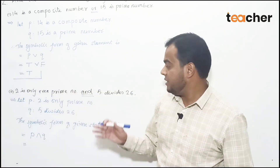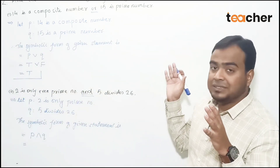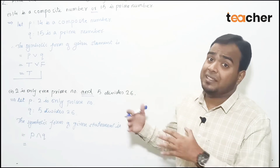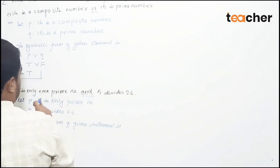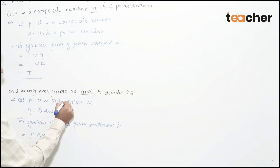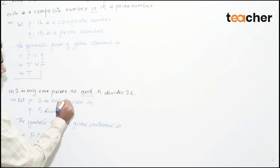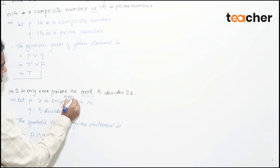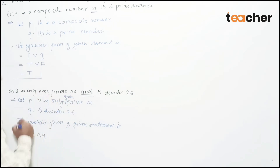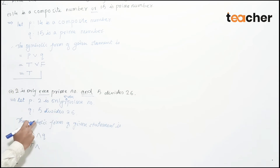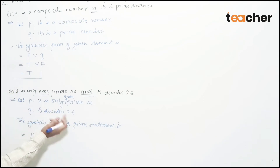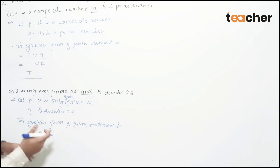Now Q: '5 divides 26.' 5 does not divide 26 completely — the division is incomplete. Therefore '5 divides 26' is false, so Q is false.